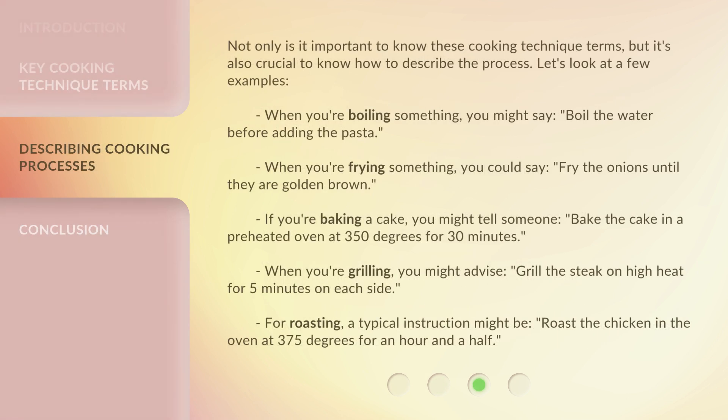Not only is it important to know these cooking technique terms, but it's also crucial to know how to describe the process. Let's look at a few examples. When you're boiling something, you might say: "Boil the water before adding the pasta." When you're frying something, you could say: "Fry the onions until they are golden brown." If you're baking a cake, you might tell someone: "Bake the cake in a preheated oven at 350 degrees for 30 minutes."